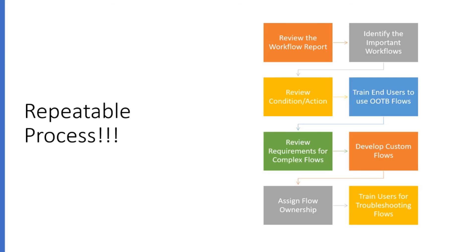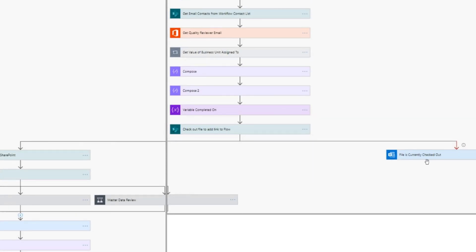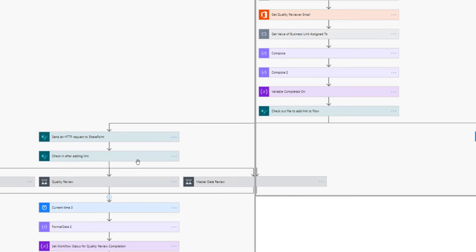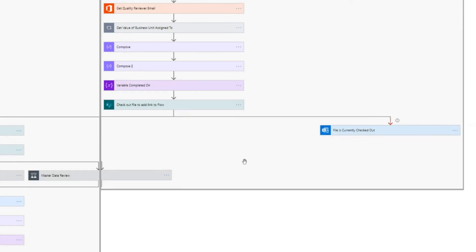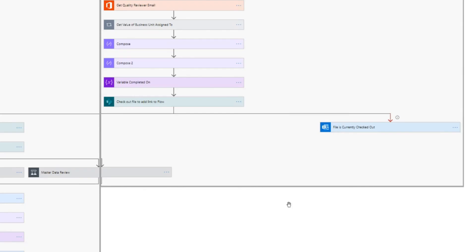Finally, train end users to do minor troubleshooting of their flows. If they miss providing a value in a form and the flow starts failing, you can have try-catch logic. For example, in one flow, after the approval starts we check at the end whether the file is checked out. If it is, rather than failing, the flow sends an email to the user saying 'the file is checked out — please check it in before running the flow.'